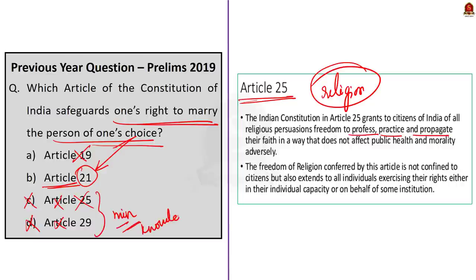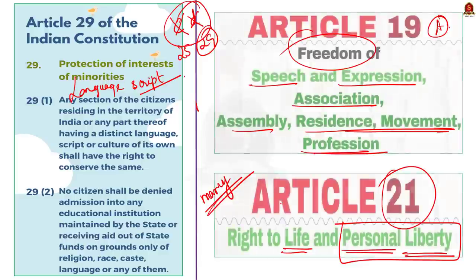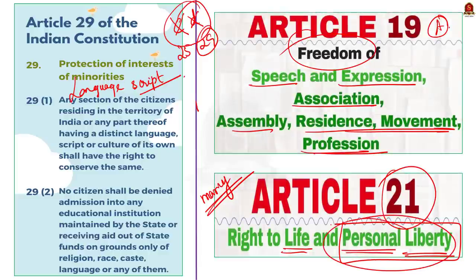You were able to eliminate two options with minimum knowledge and then identify the correct answer. Note that Article 21 will be frequently in use — even this year there may be a question on it. The Supreme Court has reaffirmed its judgment and made several rights part of Article 21. Just be aware of what rights come under it: right to livelihood, right to privacy, right to sleep, right to health — all come under Article 21. Always remember the key phrase: protection of life and personal liberty. The answer for this question is option B, Article 21.